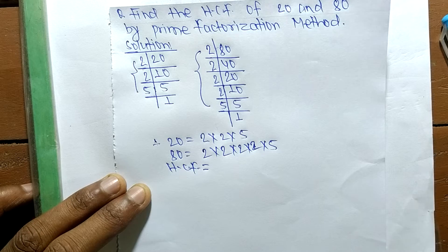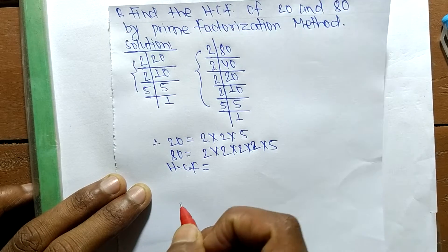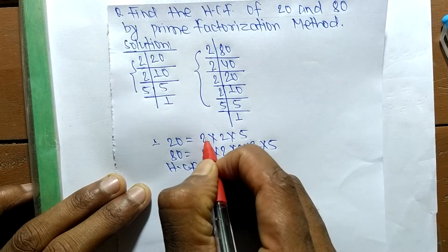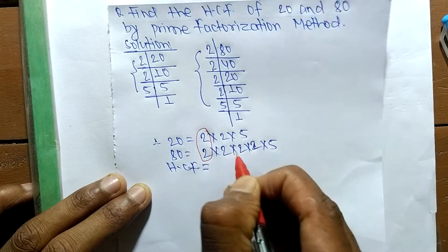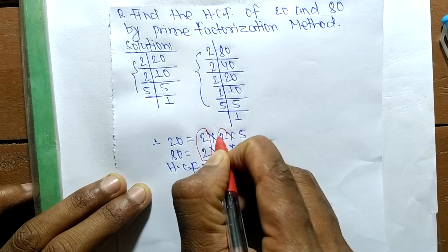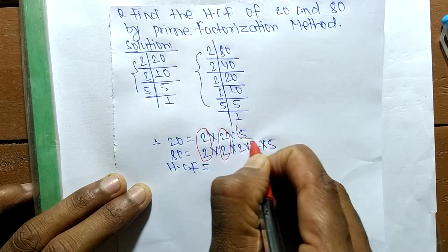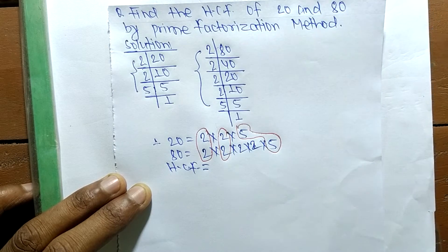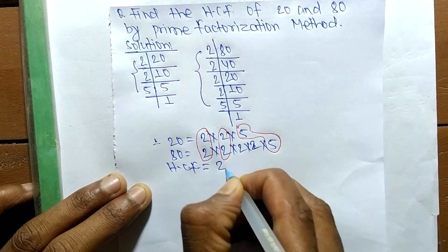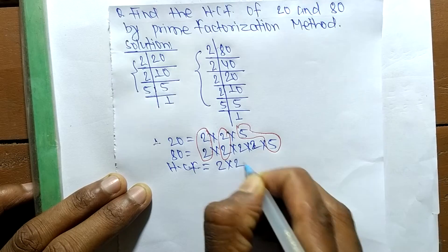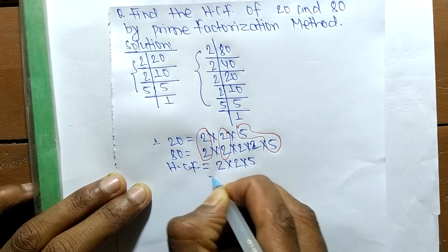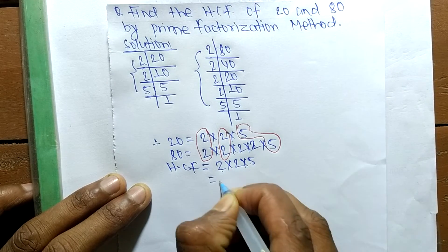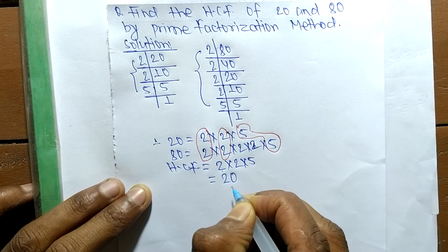We have to find out the common factors in the prime factors of 20 and 80. The first common factor is 2, the second is 2, and the third is 5. So the HCF is equal to 2 times 2 times 5, which is 4 times 5, which equals 20.